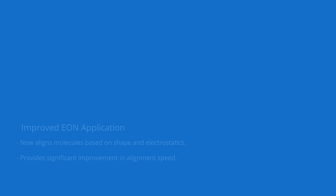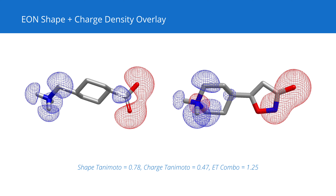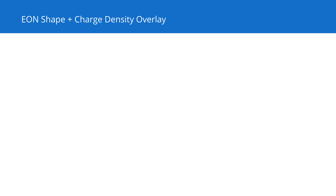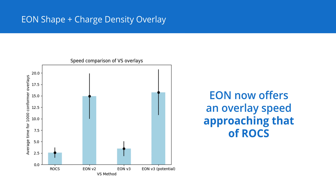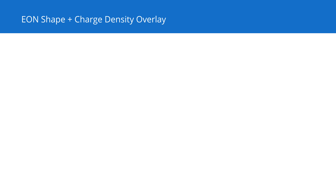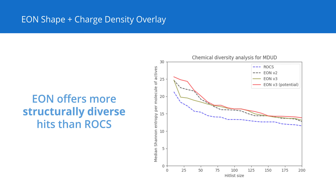EON now enables electrostatically driven molecular alignment, with an overlay speed approaching that of ROCS. Like its predecessors, EON identifies more structurally diverse hits than ROCS.